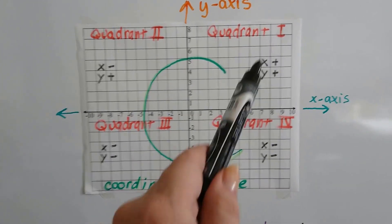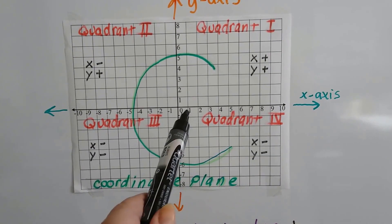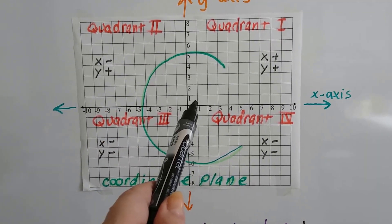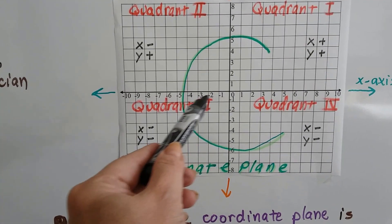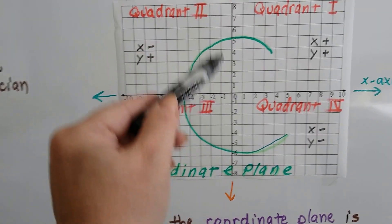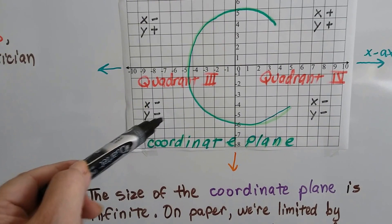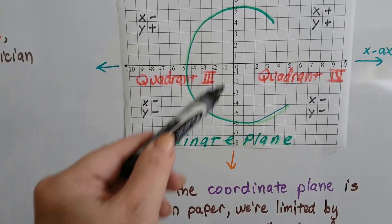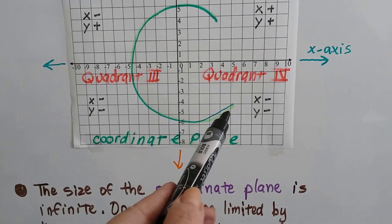Quadrant 1 starts here and that's where both x and y are positive. These are positive numbers for x and these are positive numbers for y. The minute we get into quadrant 2, you can see we went past zero and now we're in the negatives for x, but we're still in the positives for y. When we get to quadrant 3, we're in the negatives for x and we're in the negatives for y. They're both negative down here.